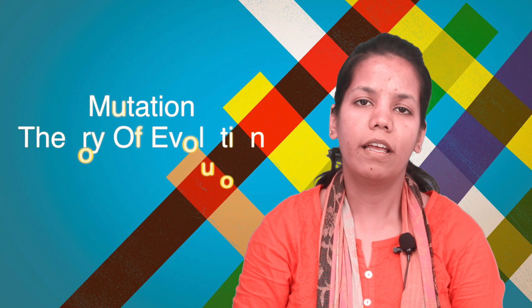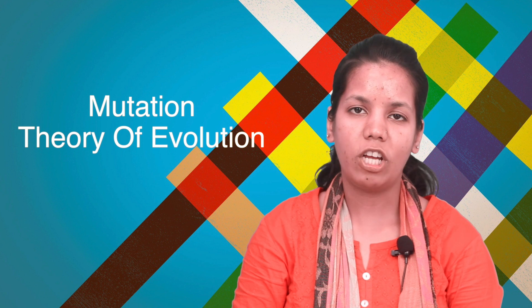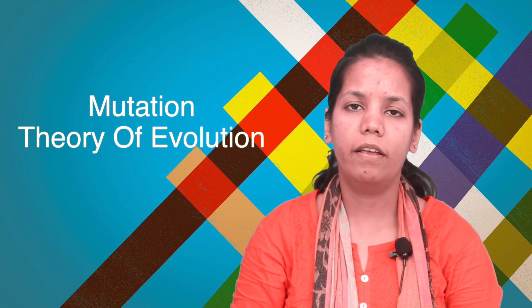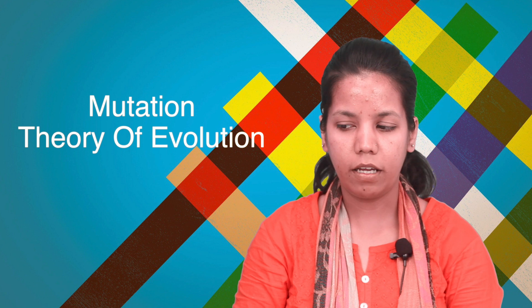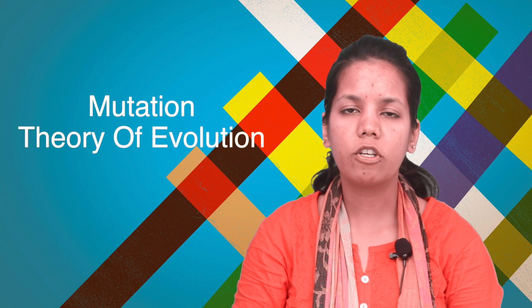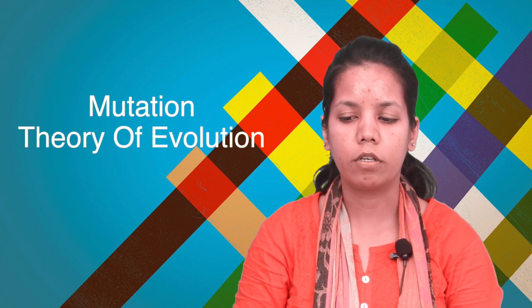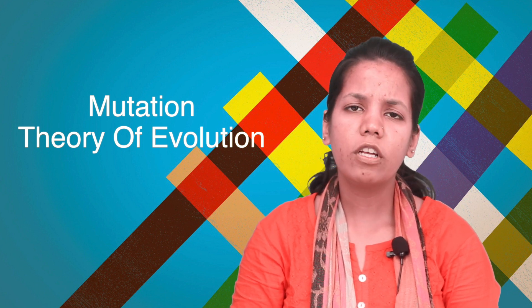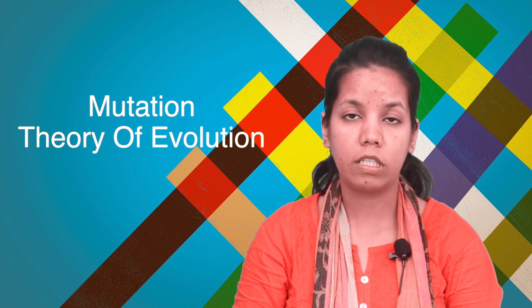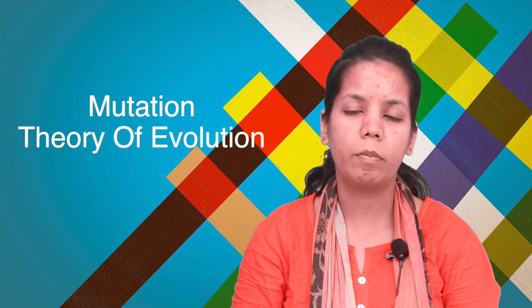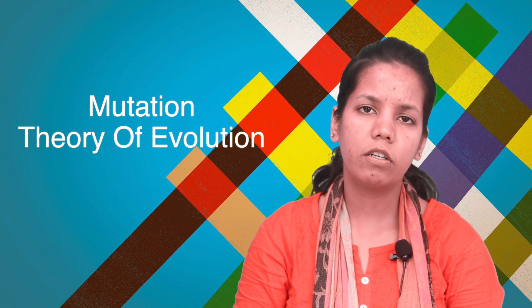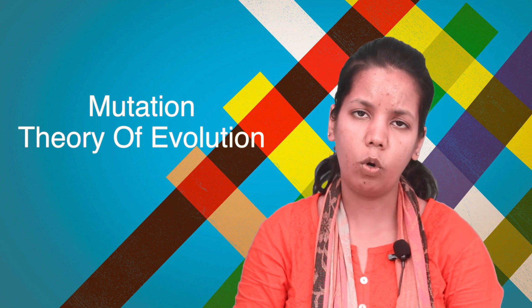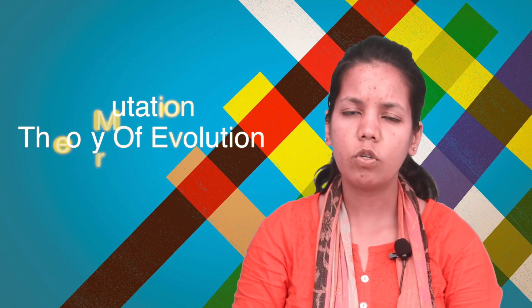Hello students, today we are studying chapter Origin and Evolution, and in that we are studying the topic Mutation Theory of Evolution. This theory has a very strong correlation with chemical theory, so let's study and find out how.